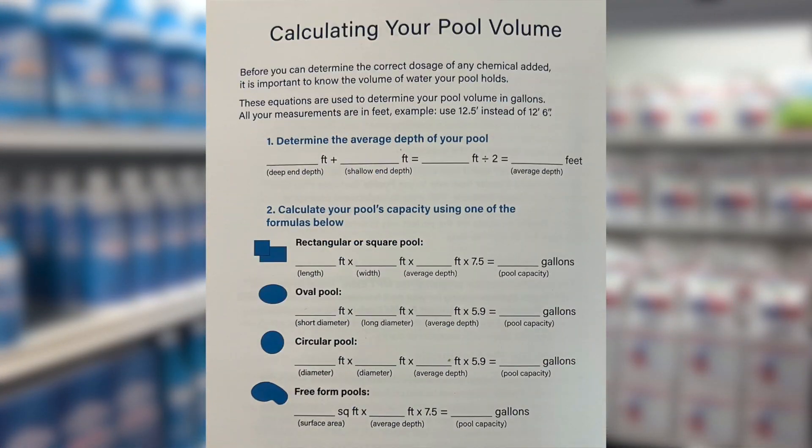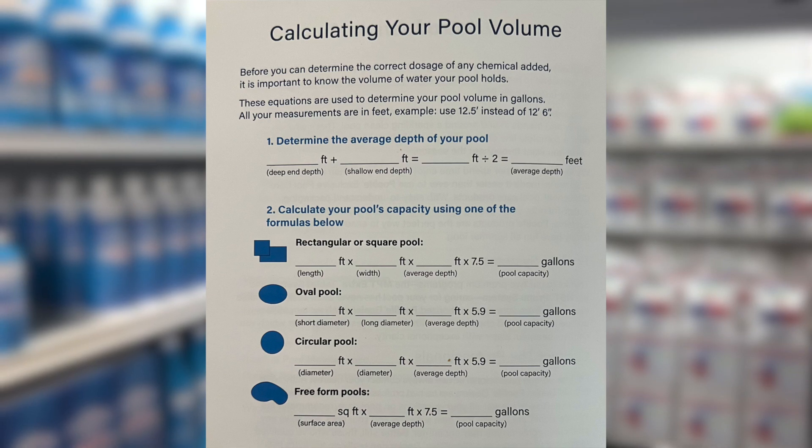This last chemical mistake is one of the biggest, and I see it quite often: customers not knowing what their gallon capacity is. It is very important to know the gallon capacity of your pool before treating it. If not, we're going to be over-treating or under-treating the pool. I'm going to post a chart on the screen — pause the video, fill in your information, and it will help calculate the gallon capacity of your pool so you know exactly what you're working with.